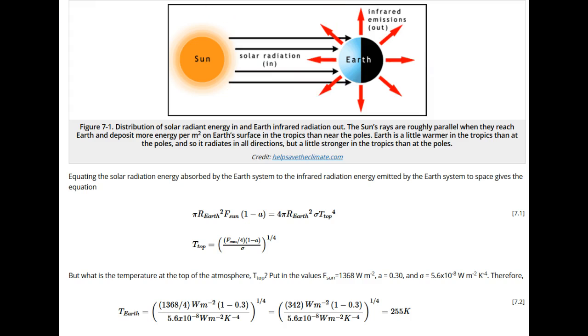The solar irradiance is essentially parallel by the time it gets to Earth, so it is intercepted by Earth's cross-section, which is just pi r Earth squared.